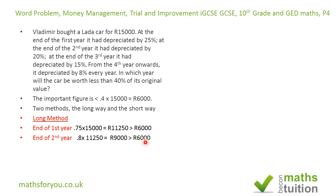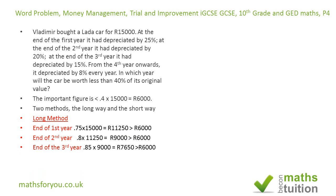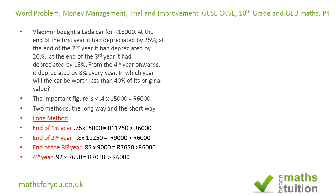At the end of the third year, because it's gone down by 15%, it will be worth 0.85 of what it was worth at the end of the second year. So 0.85 times 9,000 gives us 7,650 rubles — still more than 6,000 rubles, so we carry on.